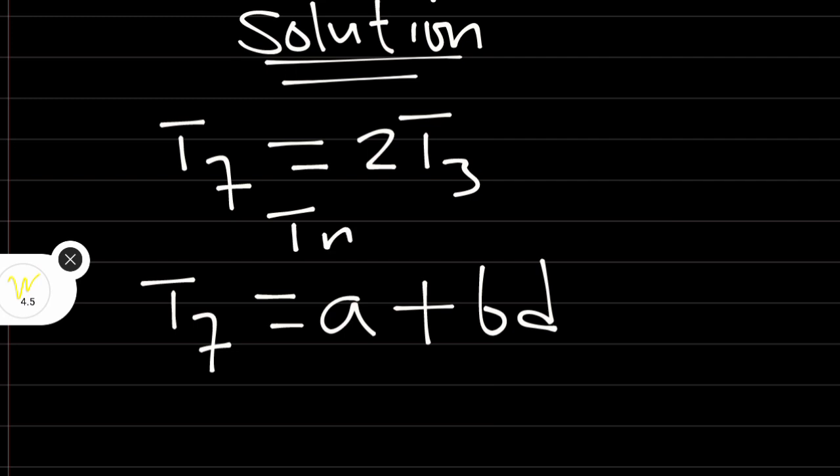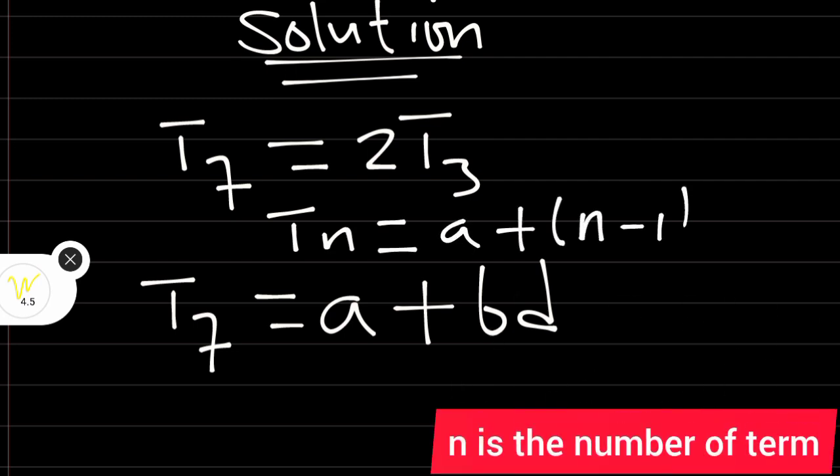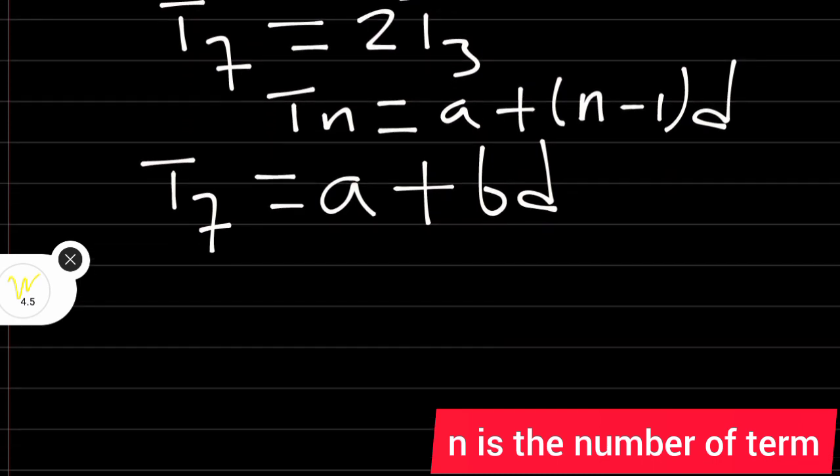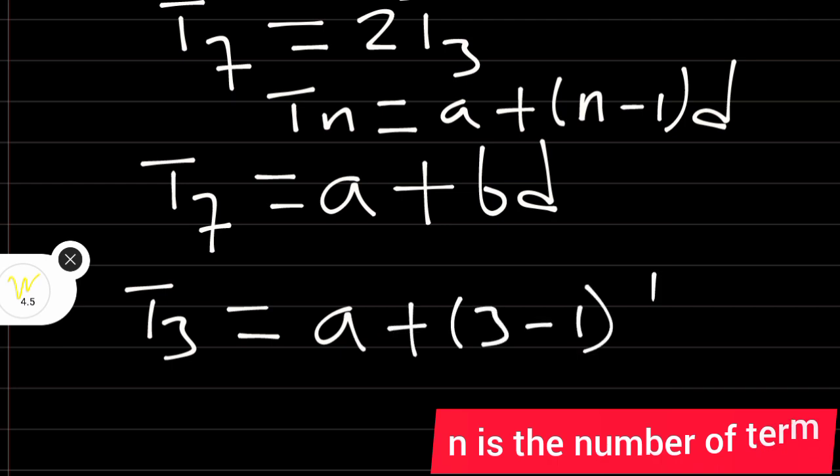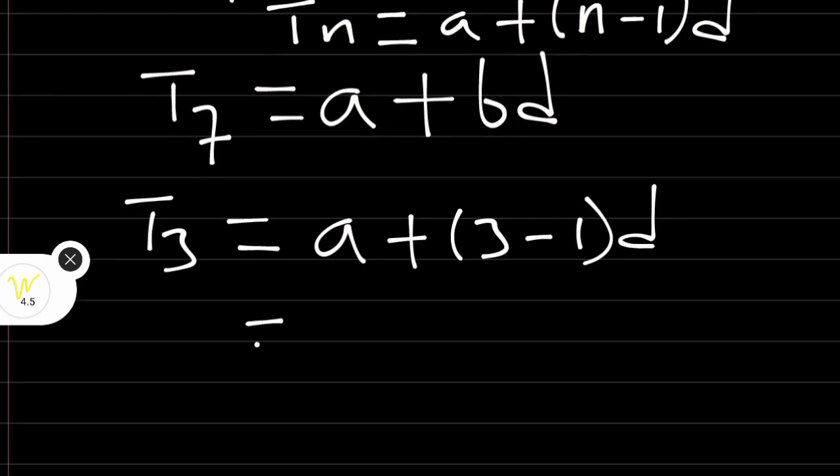Don't forget that the general term of an AP is equal to A plus N minus 1 into bracket D. Therefore the seventh term is going to be equal to 7 minus 1. That is how we got A plus 6D. And the third term will be equal to A plus 3 minus 1 into bracket D. Therefore the third term is A plus 2D.